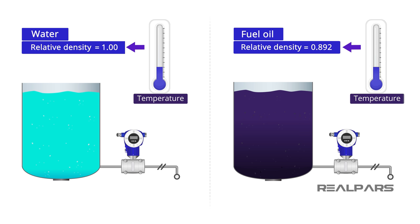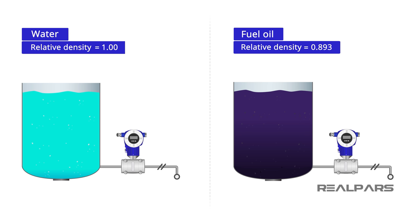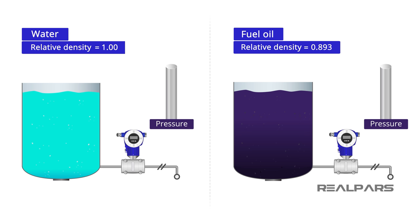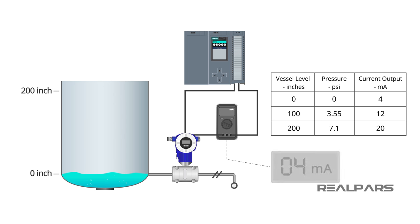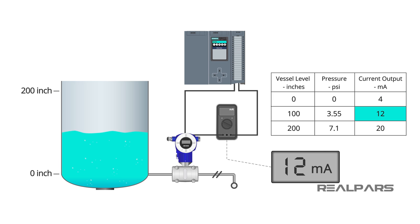The relative density of most liquids will change with temperature. For the sake of simplicity, we will ignore the effect of temperature for now. Interestingly, when the vessel is full at 200 inches, the pressure developed is much lower because the liquid has a low relative density. That is a critical consideration when calibrating the differential pressure transmitter, which is calibrated to produce 4 to 20 milliamps for a liquid level range of 0 inches to 200 inches.